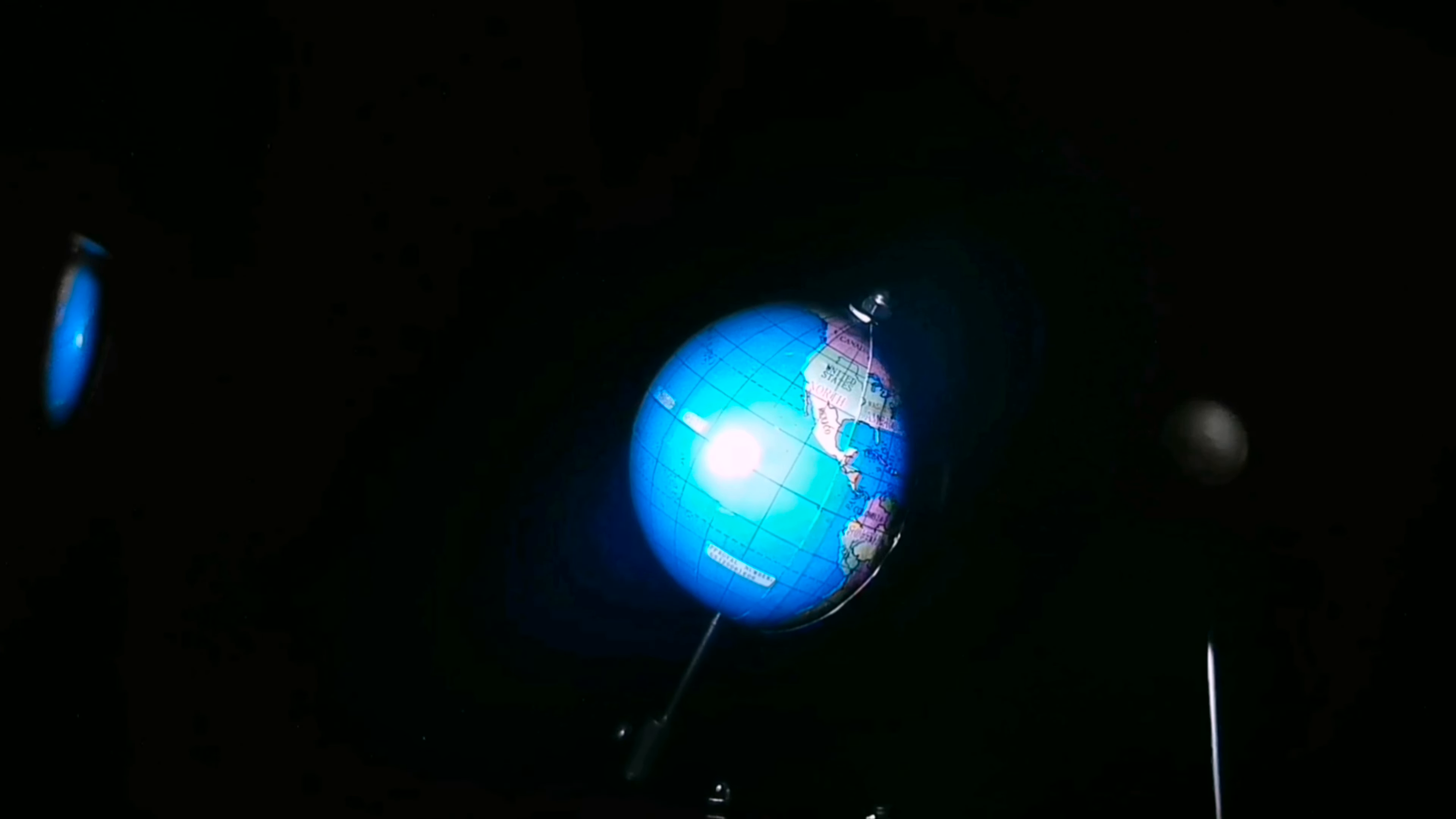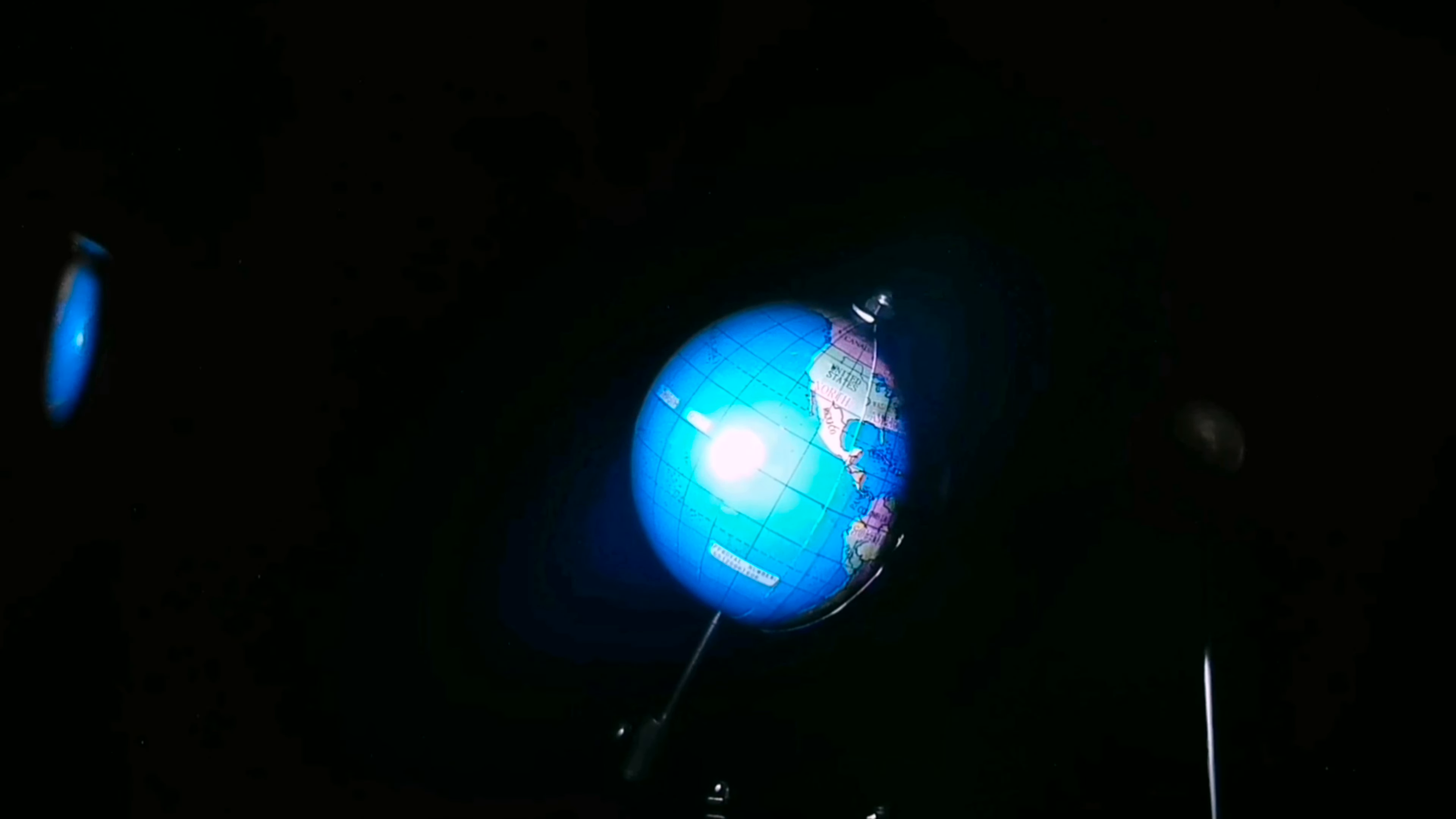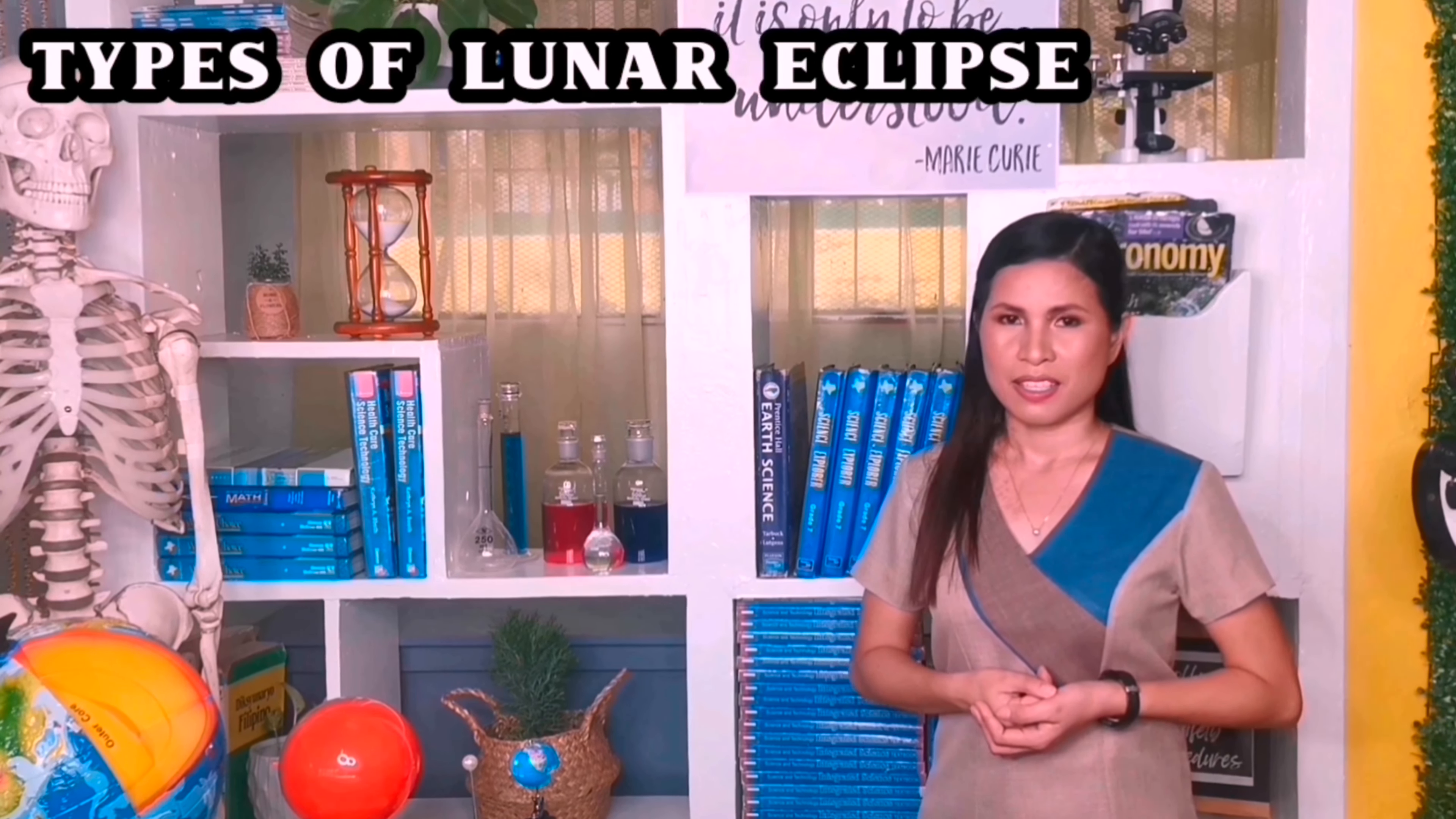A lunar eclipse occurs when the moon passes through the shadow of the Earth, making the Earth directly in between the sun and the moon. These are the two distinct parts of the shadow created during a lunar eclipse. The darkest inner region of the Earth's shadow where all sunlight is blocked out is the umbra, while the lighter outer region of the Earth's shadow where the sunlight is partially covered is the penumbra.